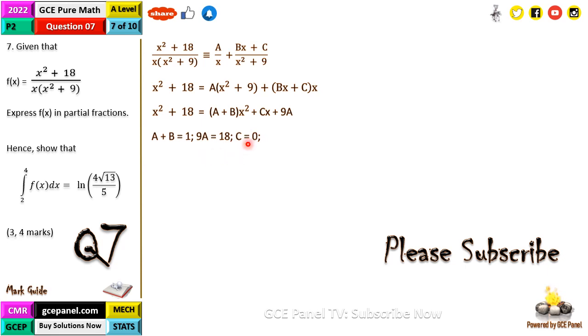From here c is 0, A will be 18 on 9 which is 2, and if A is 2 then b should be negative 1. So A is 2, b is negative 1, and c is 0.